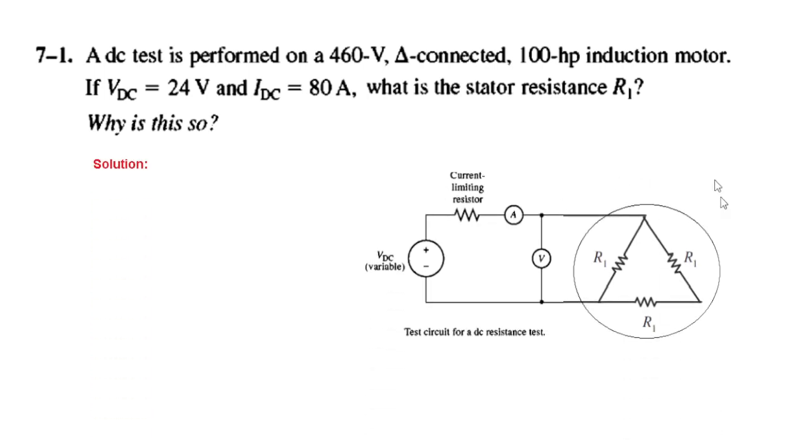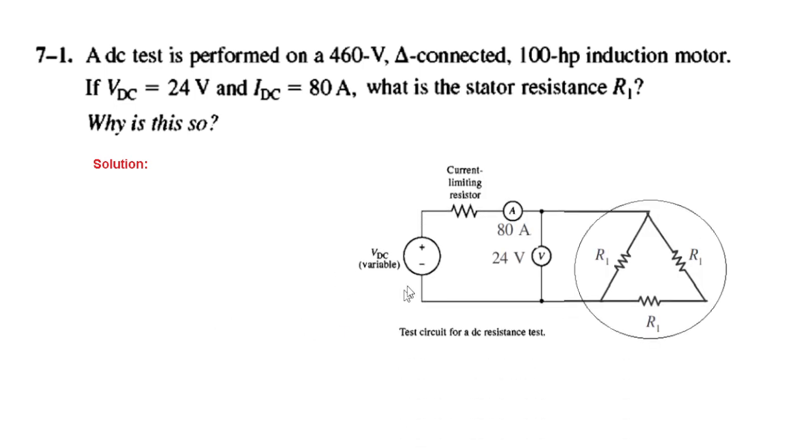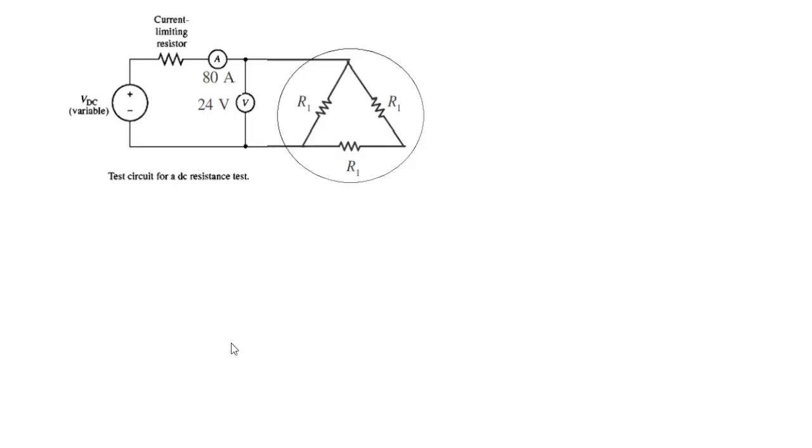This is the test circuit for the delta-connected motor. The current is 80 amperes and the voltage is 24 volts.